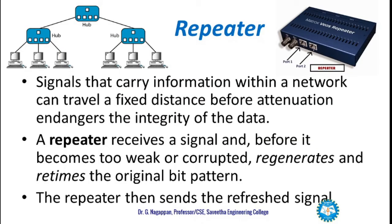What is a repeater? Signals that carry information within a network can travel a fixed distance before attenuation endangers the integrity of the data, which causes loss of data. A repeater receives a signal and, before it becomes too weak or corrupted, regenerates and retains the original bit pattern. The repeater then sends the refreshed signal. Through this port, it will receive and repeat the signal, strengthening it so that it can be transmitted for still more distance.